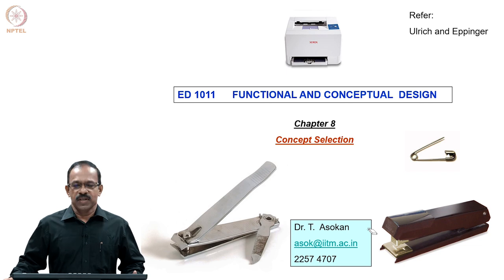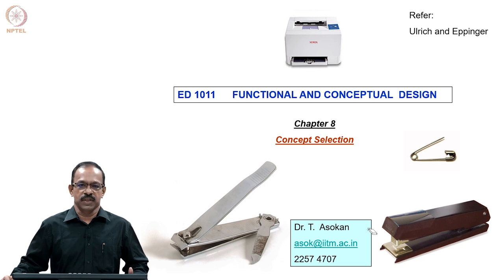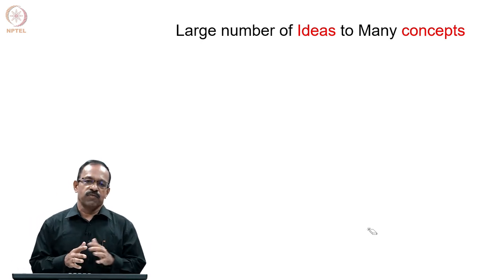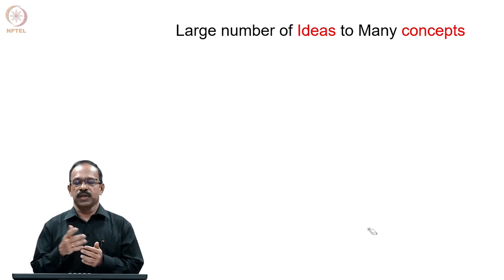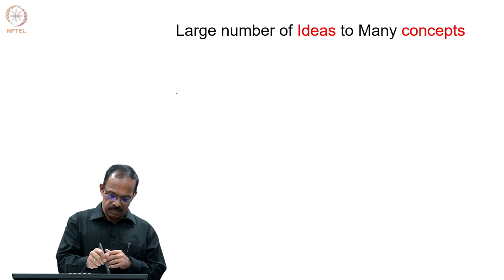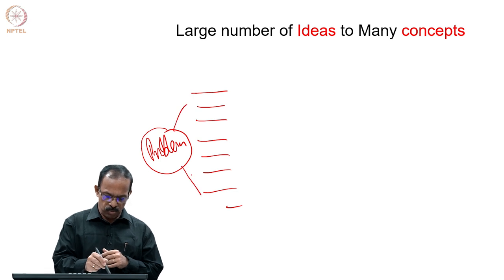We will start a new topic today: concept selection. This is going to be the last topic in this course and will discuss the selection of the best concept from the concepts we generated using concept generation methods. As you know, there are a large number of ideas that you will get once you do a concept generation exercise — brainstorming, 635, or TRIZ methodology — and you can generate a large number of ideas to solve a problem.